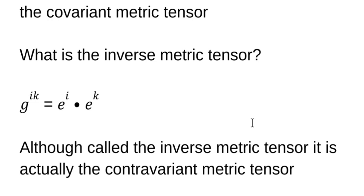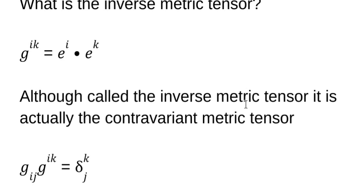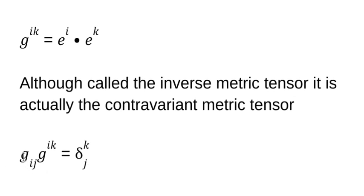So if it's the inverse of the metric tensor, then that must mean that the metric tensor times the inverse must be equal to the Kronecker delta, or the identity matrix in this case, right?